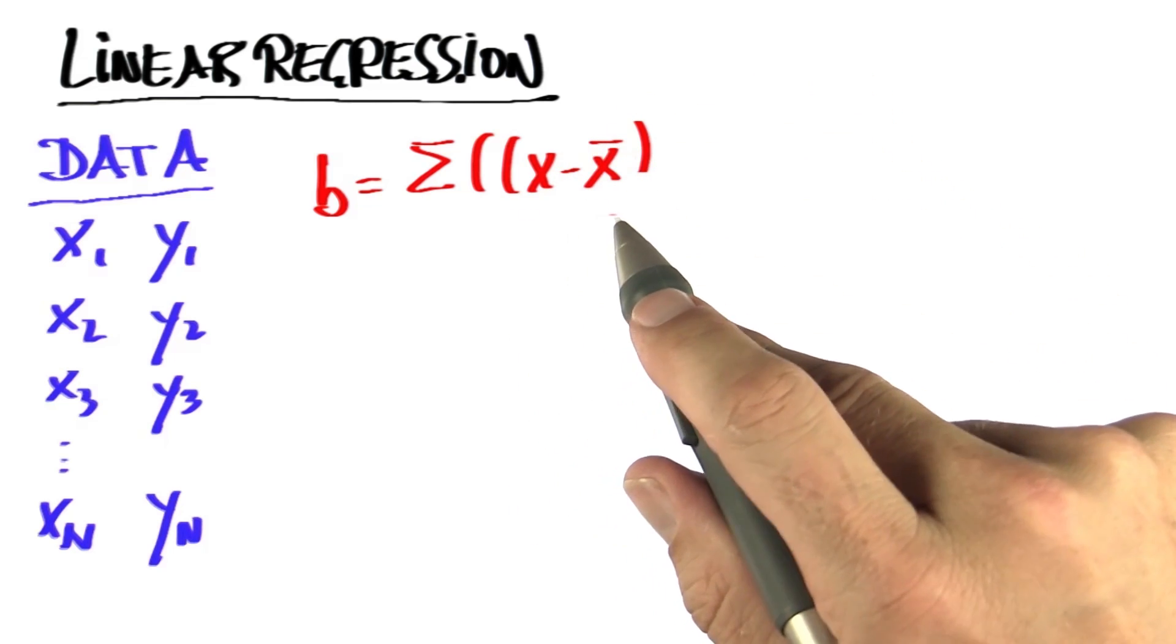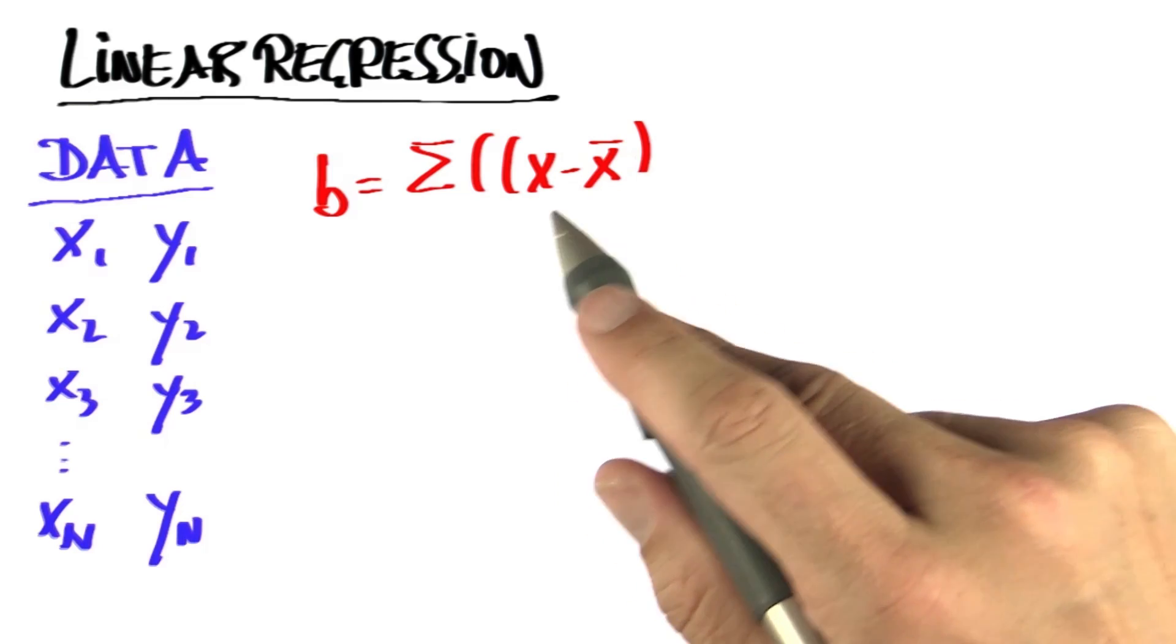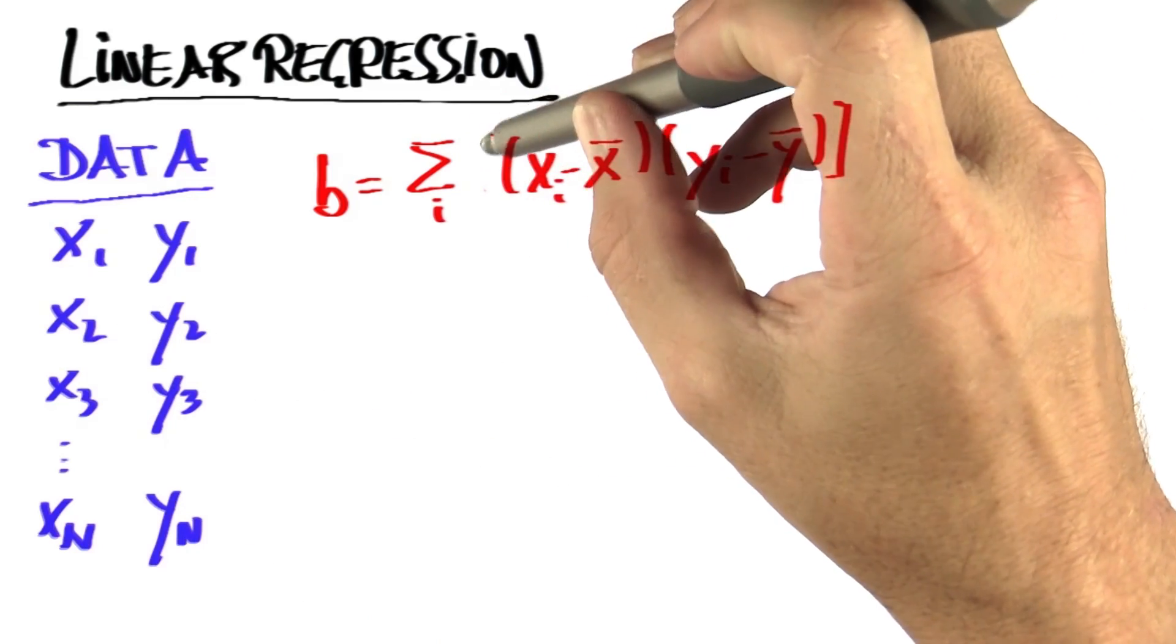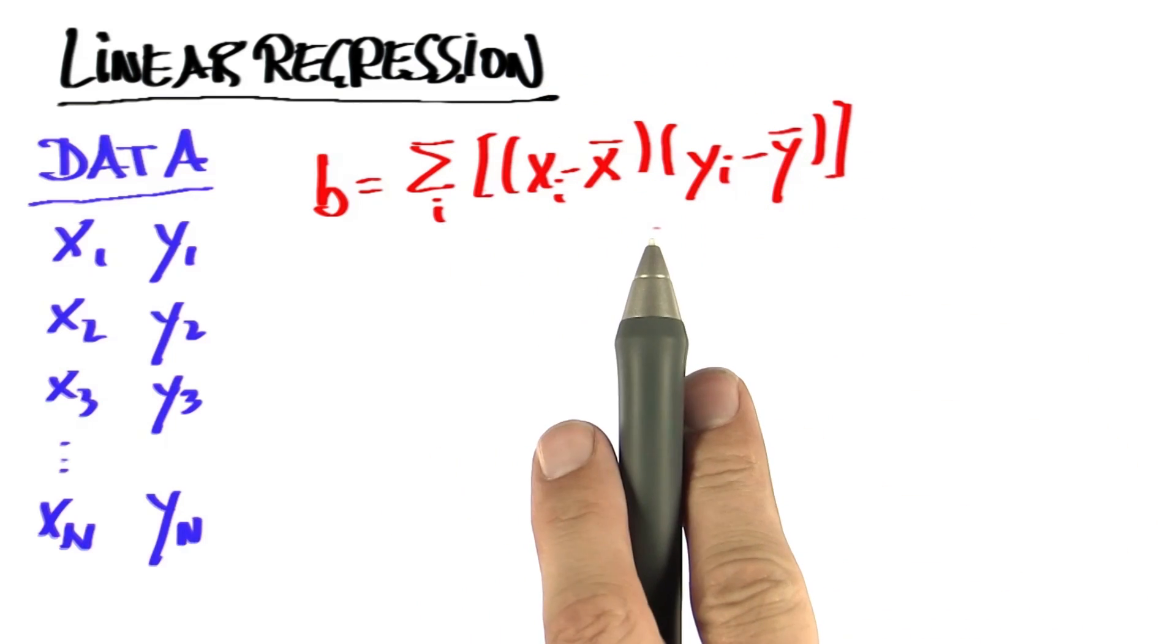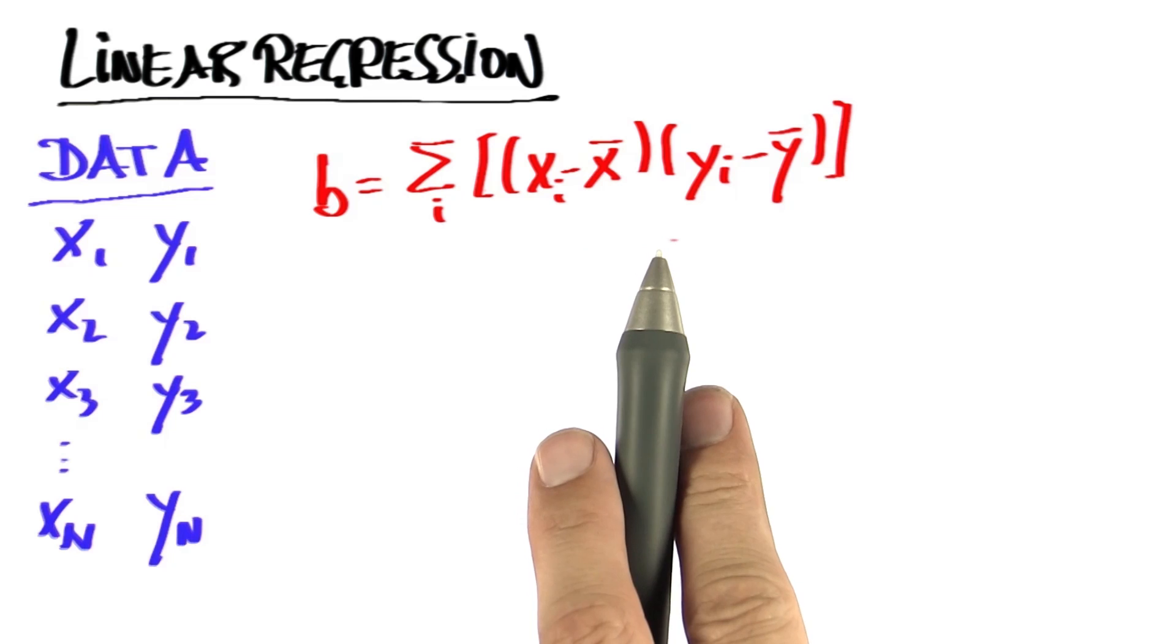Just in the calculation of the variance, you take the difference between x and the mean of x. But rather than squaring this as in the variance case, you now do a product with the same term for the y's.